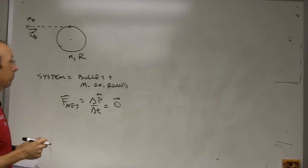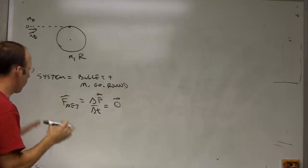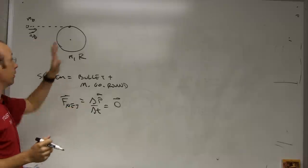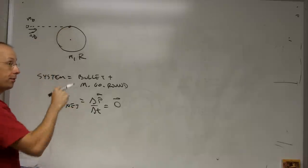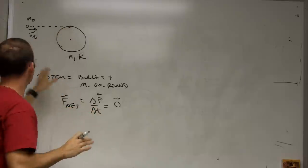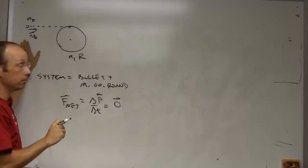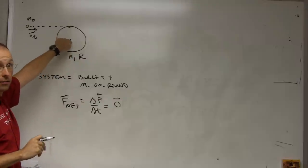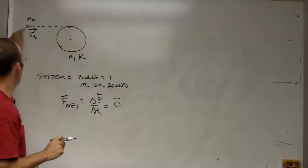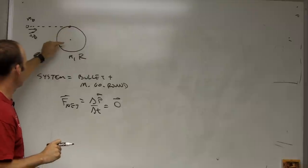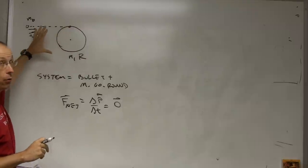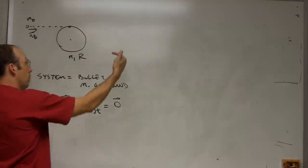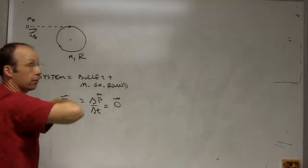We can't really use momentum principle here because what forces are acting on the system? Well I have the ground pushing up this way. This is a top view. And gravity pulls down and those essentially cancel even though not for the bullet. But even with that it doesn't matter. Because this little axle is fixed into the ground. And so when this bullet hits the merry-go-round then if the axle wasn't fixed the merry-go-round would slide and spin. But it's fixed. So the axle exerts a force this way during some time.